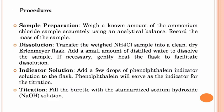First, sample preparation: weigh a known amount of the ammonium chloride sample accurately using an analytical balance and record the mass. Second, dissolution: transfer the weighed NH4Cl sample into a clean, dry Erlenmeyer flask. Add a small amount of distilled water to dissolve the sample, and if necessary, gently heat the flask to facilitate dissolution.